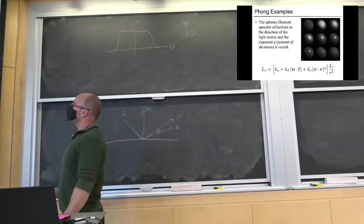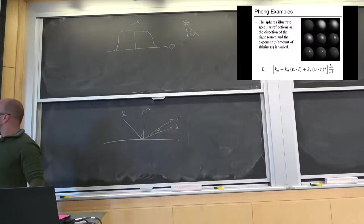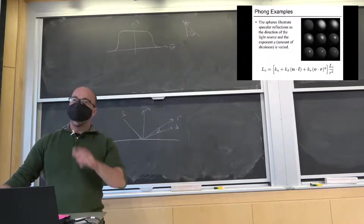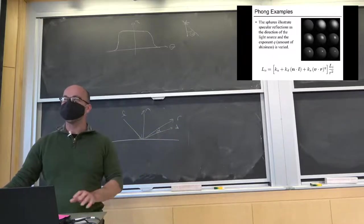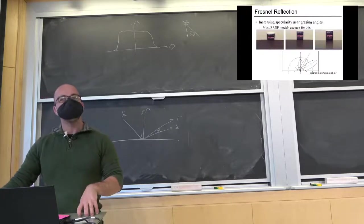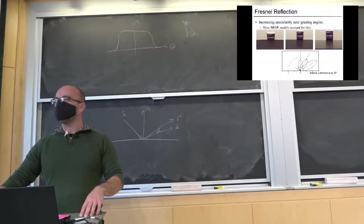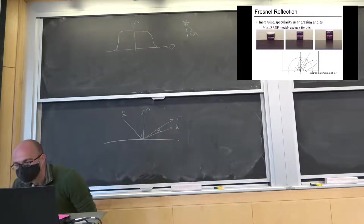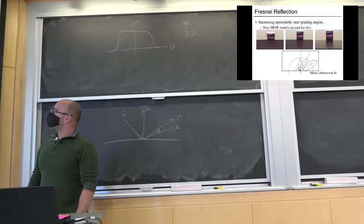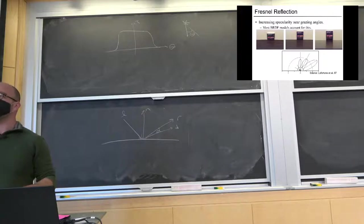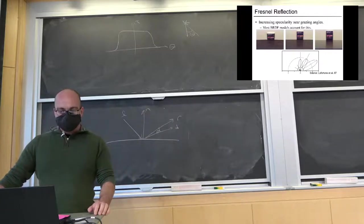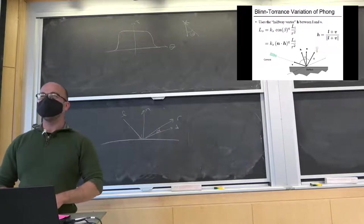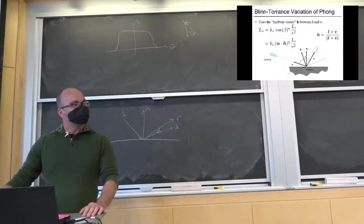Here are some examples of Phong spheres — you've probably seen these in computer graphics demos, just spheres with little pointy specular highlights. Phong does not account for many physical phenomena. One we mentioned earlier is Fresnel reflection — the idea that the amount of reflection can depend on viewing angle — which is really not accounted for in Phong. The idea being that if I look at a surface at a glancing angle, there's more reflection than when I look at it head-on where it looks more diffuse.